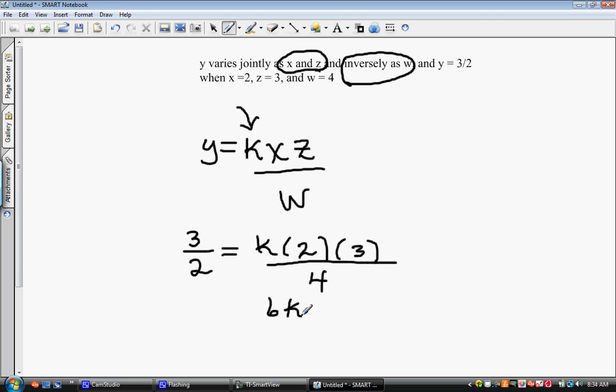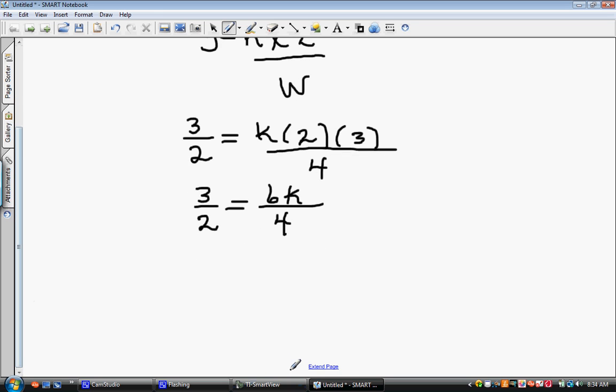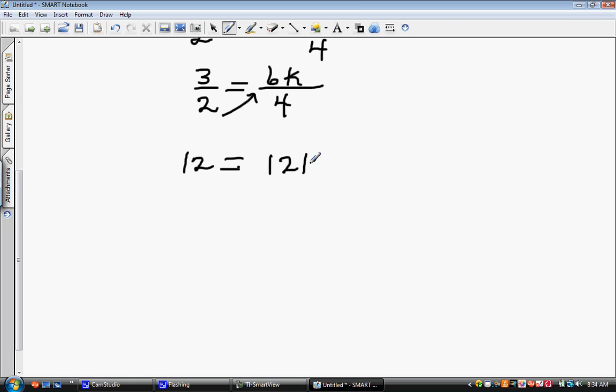We have a 3 halves on the other side, so we can do our basic cross multiplication. And we can say 3 times the 4 cross multiplier. Remember 3 times 4 is 12. And 2 times 6k is 12k. So in this case, k is going to actually be 1 when we do our division.